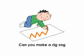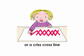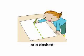Can you make a zigzag or a crisscross line? Or a dashed or dotted line?